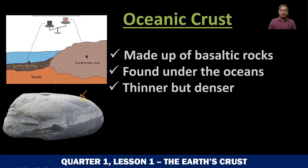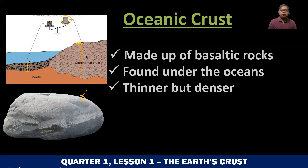And they are thinner. Look at this — compared to continental crust, which is this thick, oceanic crust is this thick only. So mas manipis siya. But they are denser. Masiksikan yung mga molecules niya. That's why, if you have a rock sample from the continental crust and another rock sample from the oceanic crust, the same size, the same volume — magkaparesang size — but if you weigh them, mas mabigat talaga yung oceanic crust, because they are denser.